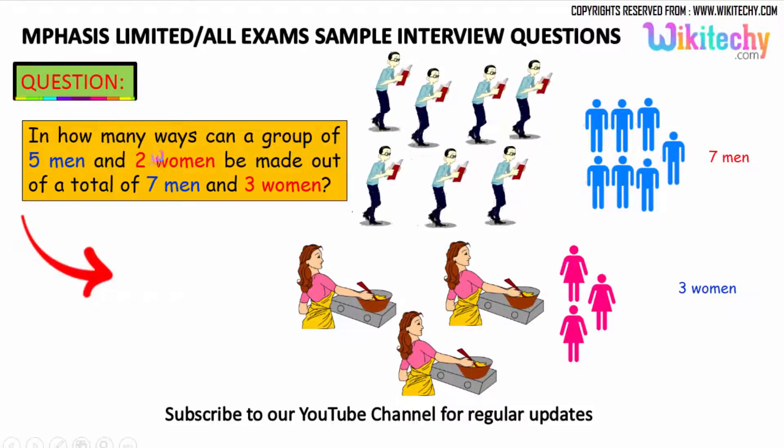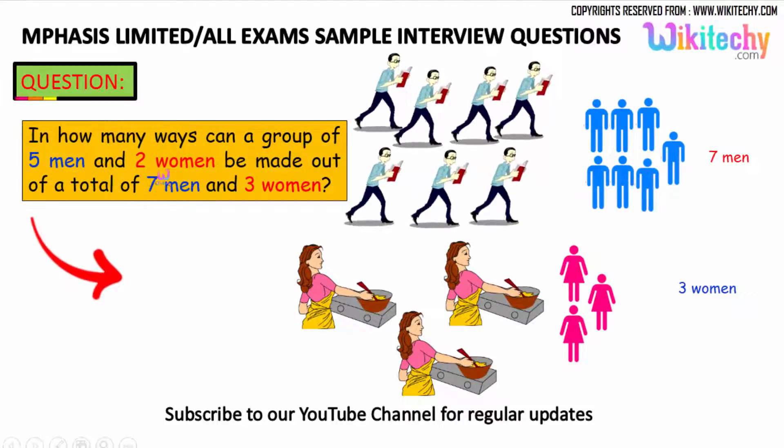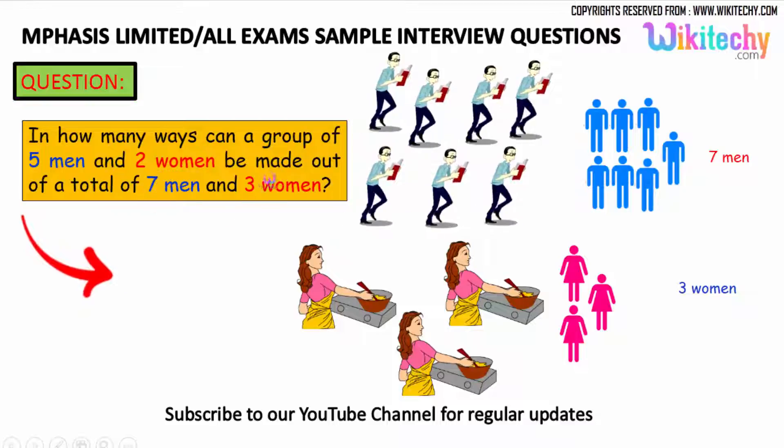In how many ways can a group of 5 men and 2 women be made out of a total of 7 men and 3 women?